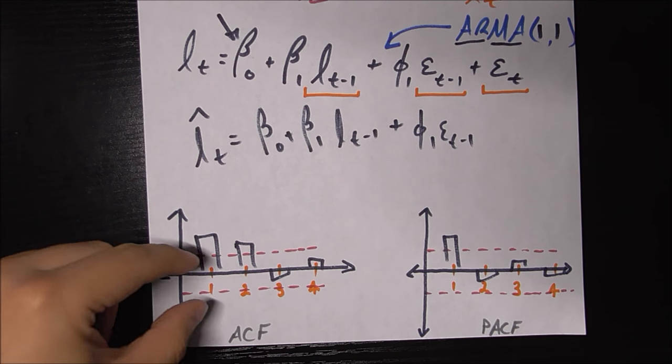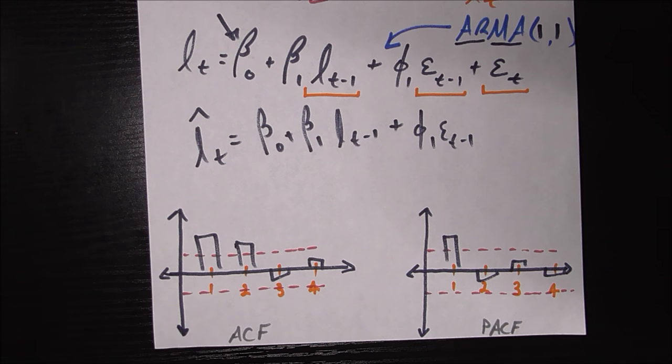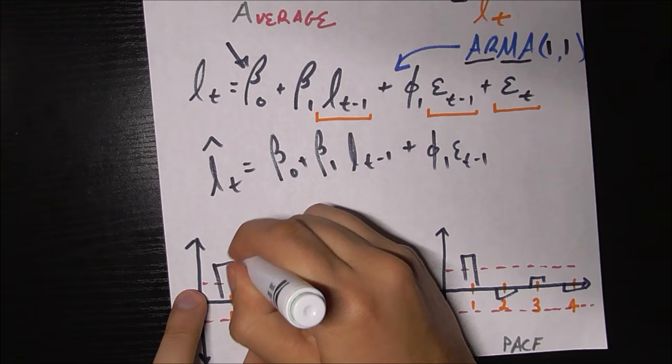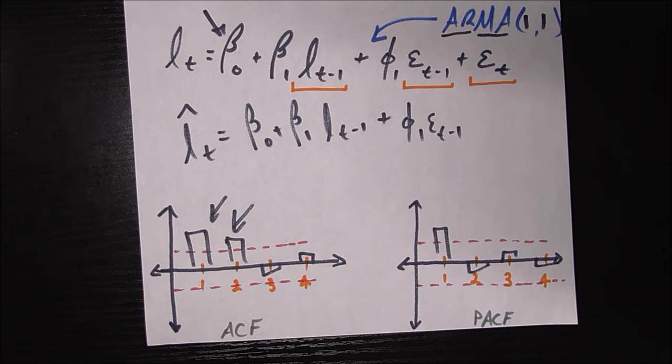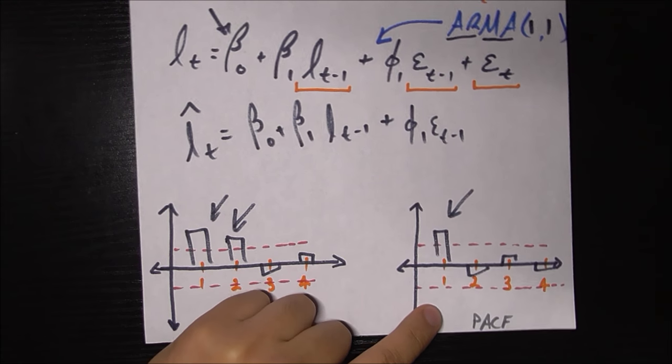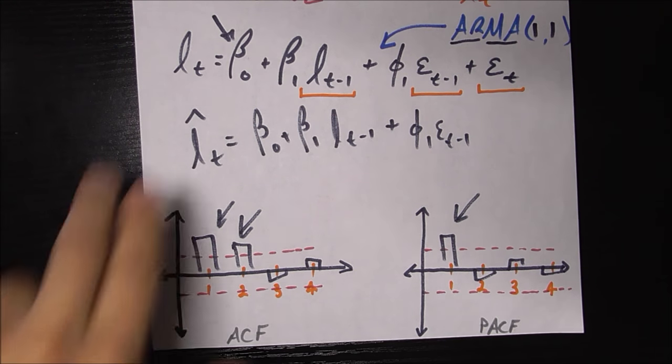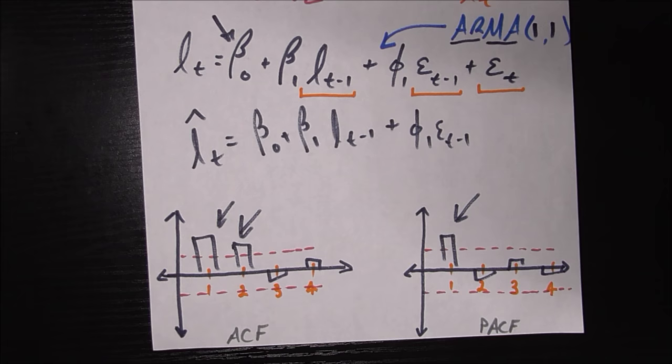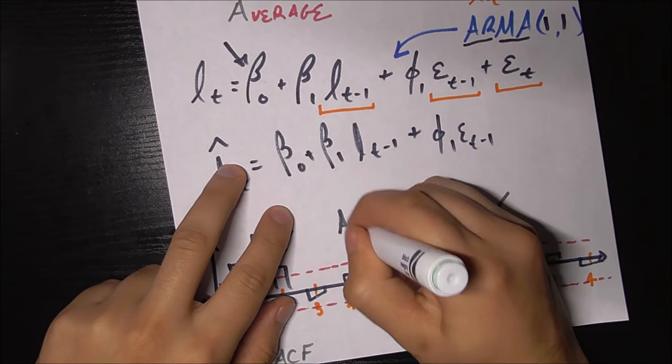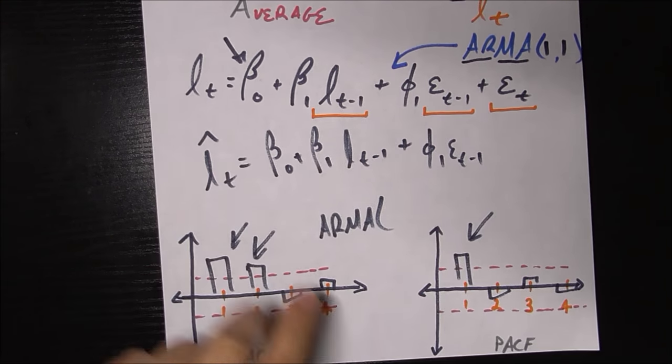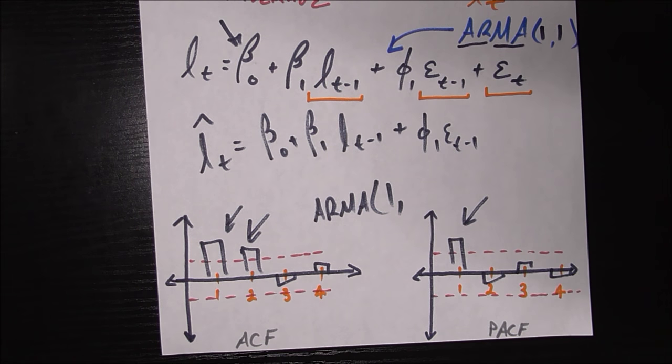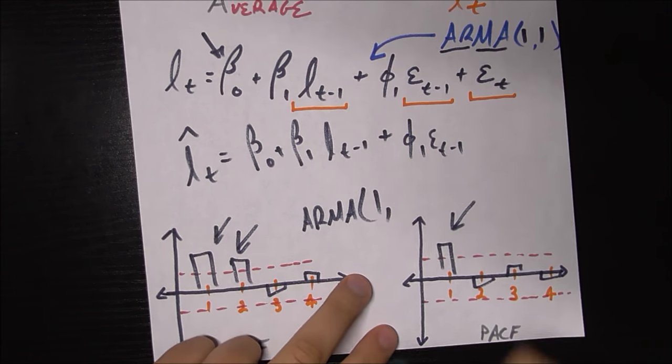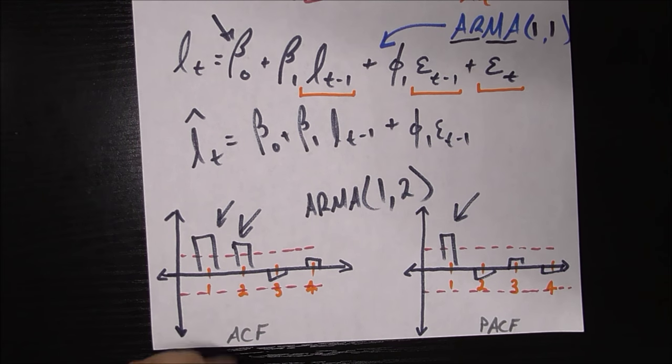In the ACF, anything outside those bands would be telling us the order of the moving average bit. So here, that would be one and two. For PACF, anything outside the band tells us the order of the autoregressive bit, which here would just be one. So a good candidate given this information of the ACF and PACF would be an ARMA model. The AR number comes from PACF being one, and MA comes from ACF, which here would be two. An ARMA(1,2) model.